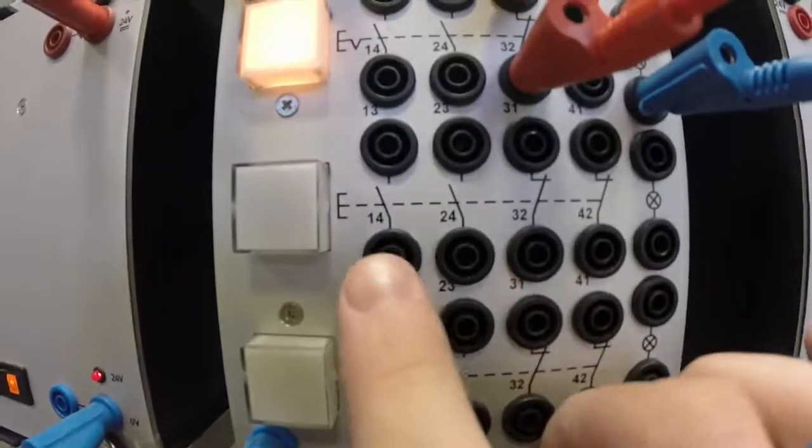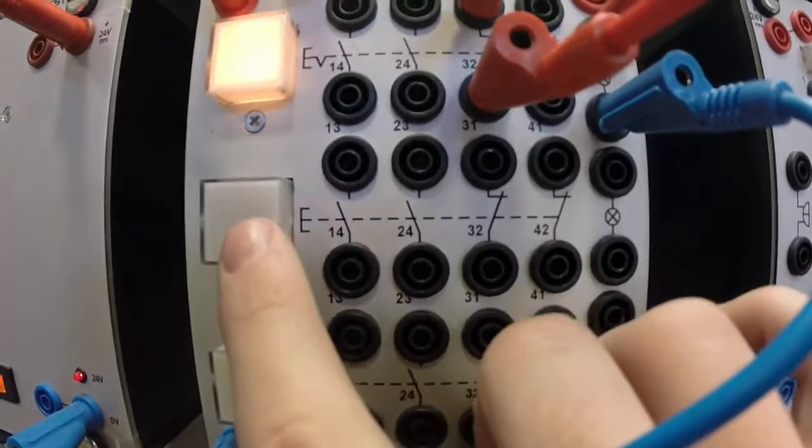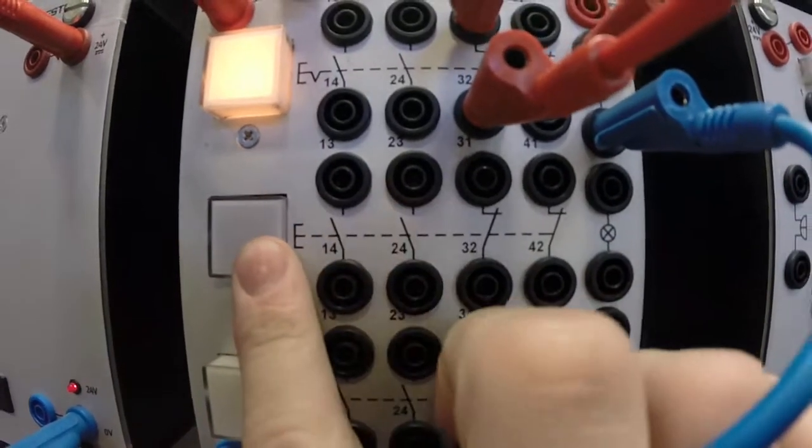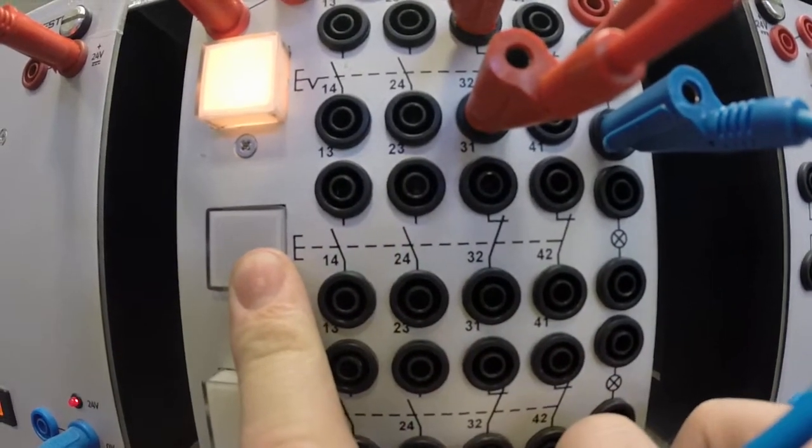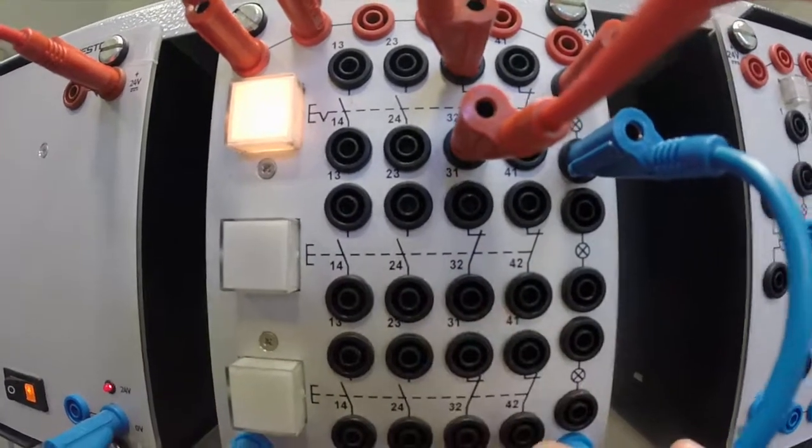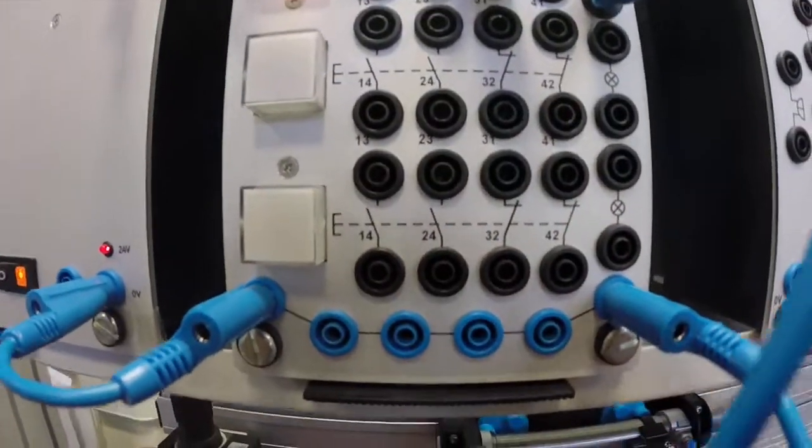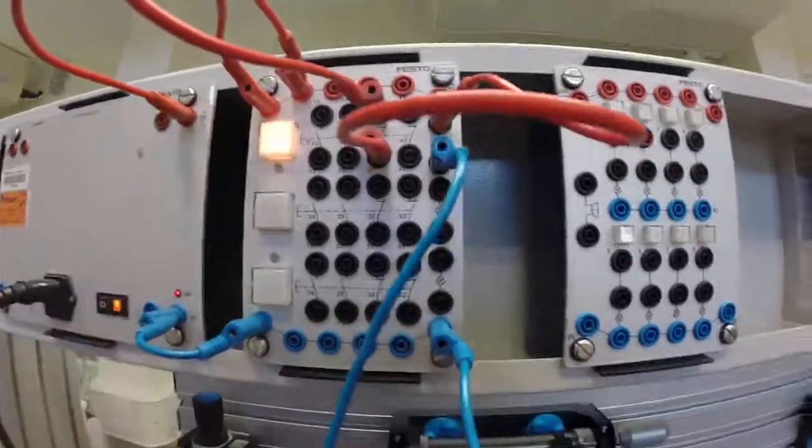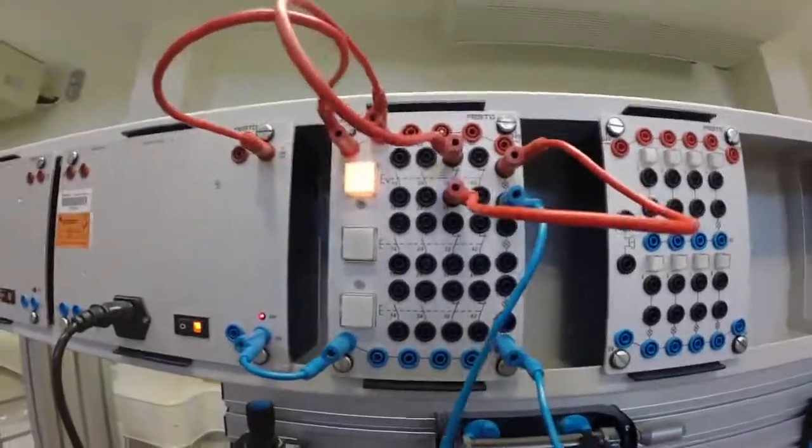The same thing happens for this button down here. Once you operate this button, all those contacts will either join across or open, and when I release it they fall back into their resting position. That's how we use our input box.